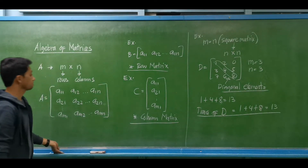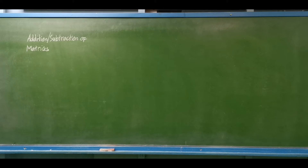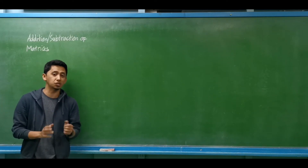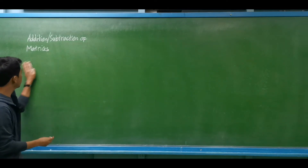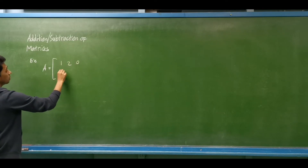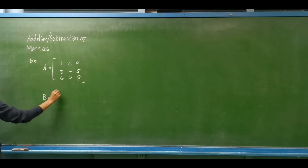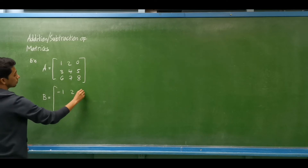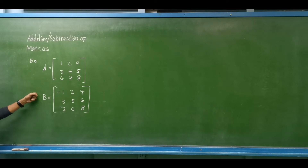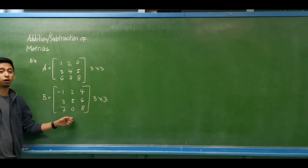Let us proceed to operations — specifically addition or subtraction of matrices. Take note that we can only perform addition or subtraction for matrices having the same size or the same dimension. For example, matrix A has elements 1, 2, 0 / 3, 4, 5 / 6, 7, 8, and matrix B has elements −1, 2, 4 / 3, 5, 6 / 7, 0, 8. The dimension of matrix A is 3×3, and the dimension of matrix B is also 3×3, therefore we can perform addition or subtraction.